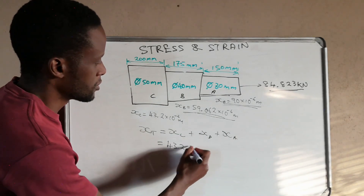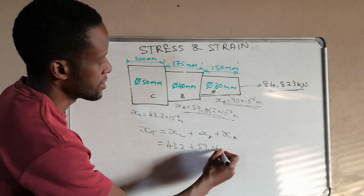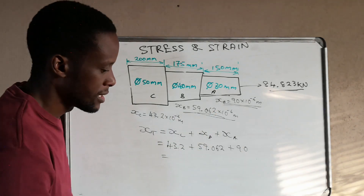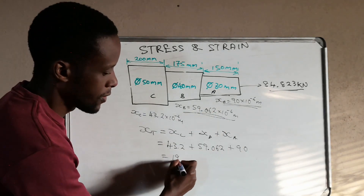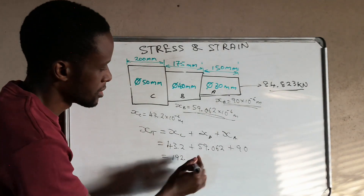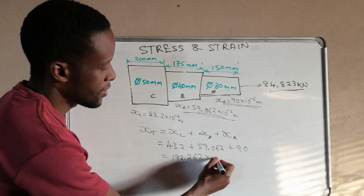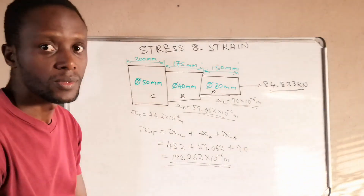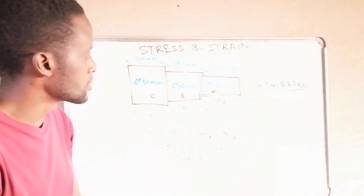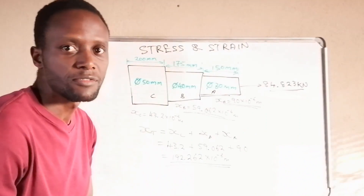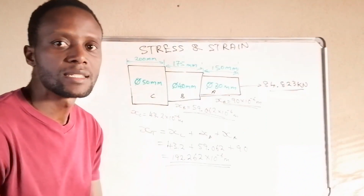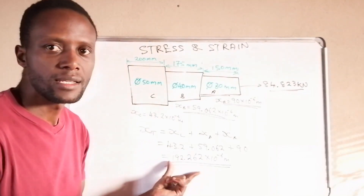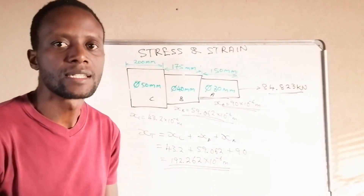Adding those values: 43.2 + 59.062 + 90 = 192.262 × 10⁻⁶ meters. The question did not specify whether to give the answer in meters or millimeters, so we leave the answer in meters. If the question specifies a unit, you must convert accordingly. The total change in length is 192.262×10⁻⁶ meters.